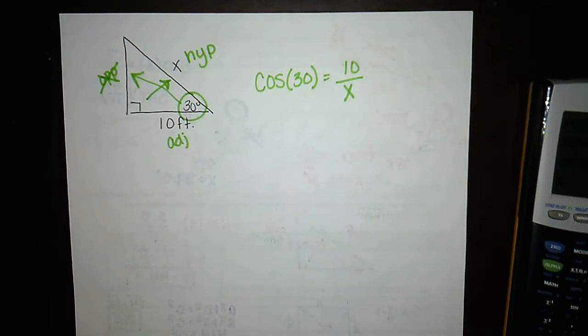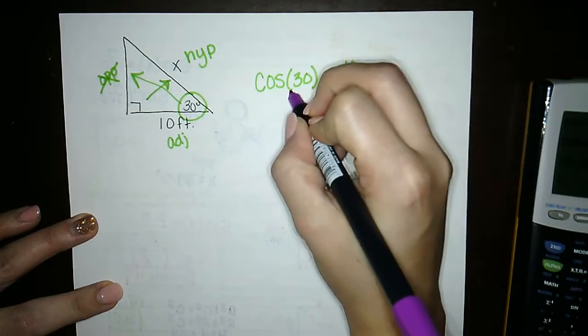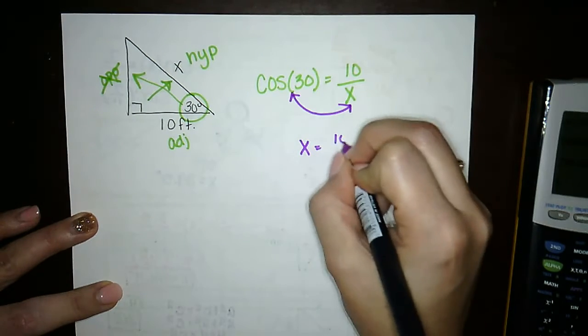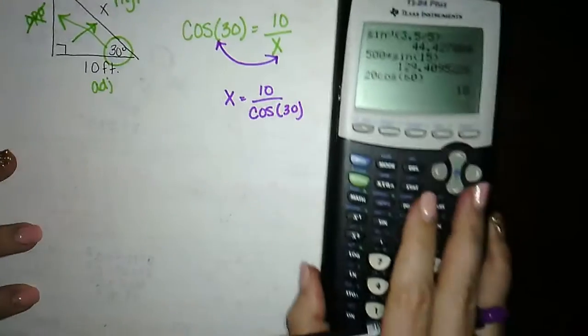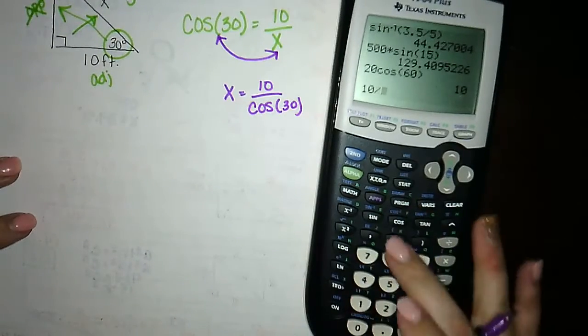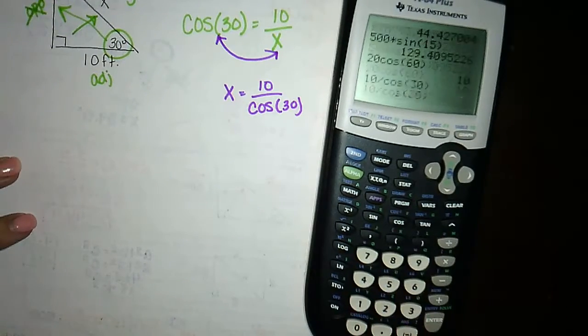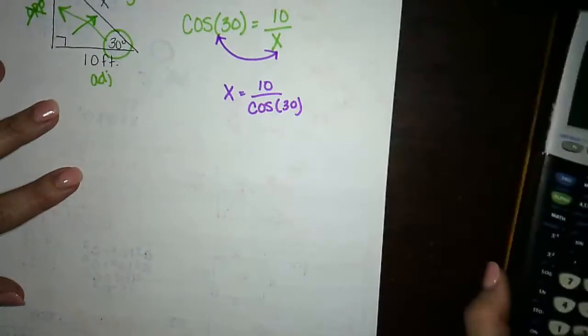The trick I showed my students last year, all you do is reverse these. You get x equals 10 divided by cosine 30. So, 10 divided by cosine 30, and you get 11.55.